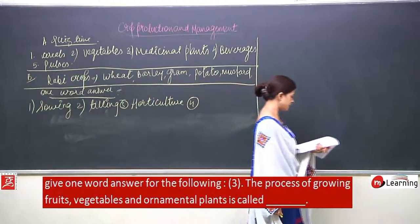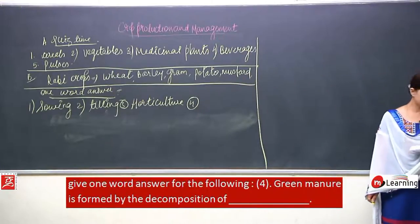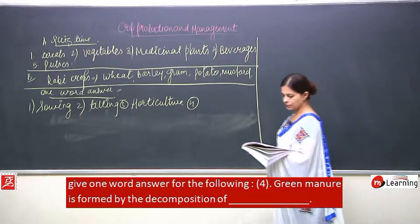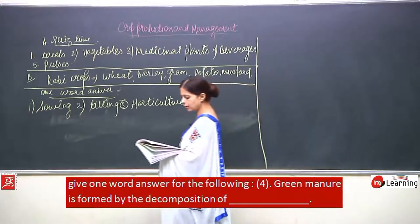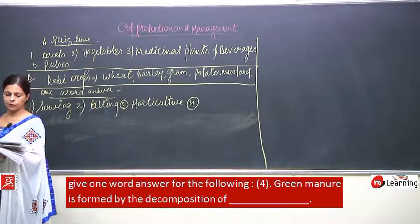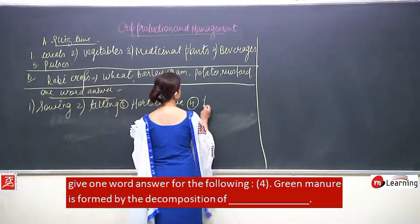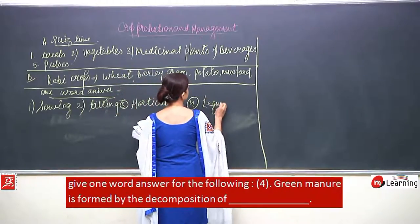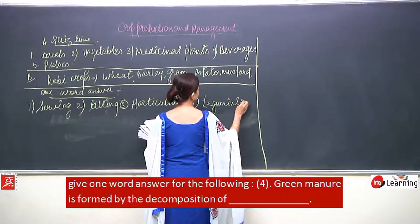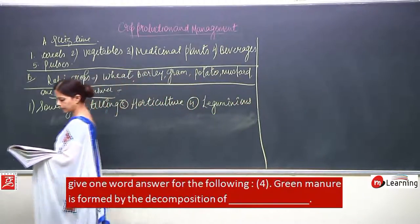Number 4: green manure is formed by the decomposition of leguminous plants.